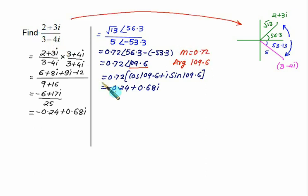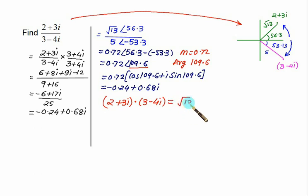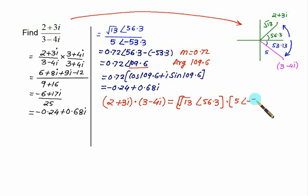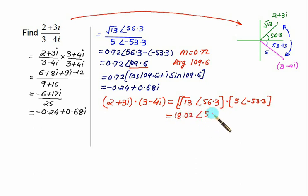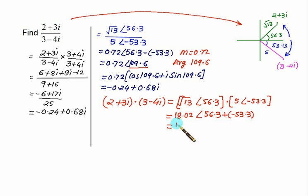For multiplication using polar form, take (2 + 3i)(3 - 4i) = √13 ∠56.3° × 5 ∠-53.13°. Multiply the moduli: √13 × 5 ≈ 18.02. For multiplication, add the angles: 56.3° + (-53.3°) = 3°. So the result is 18.02 ∠3°. Converting using cos θ + i·sin θ gives the final Cartesian answer.